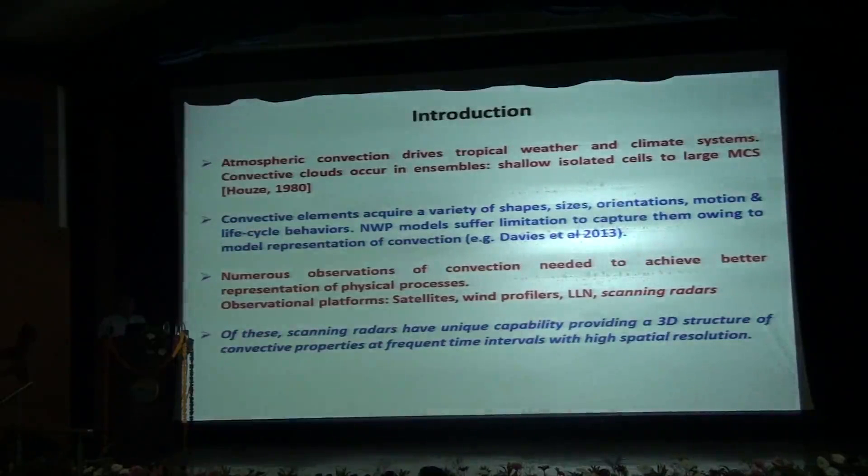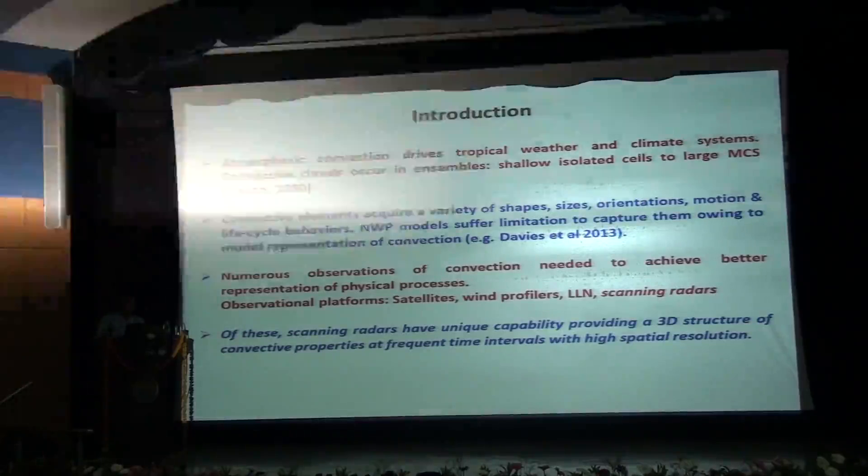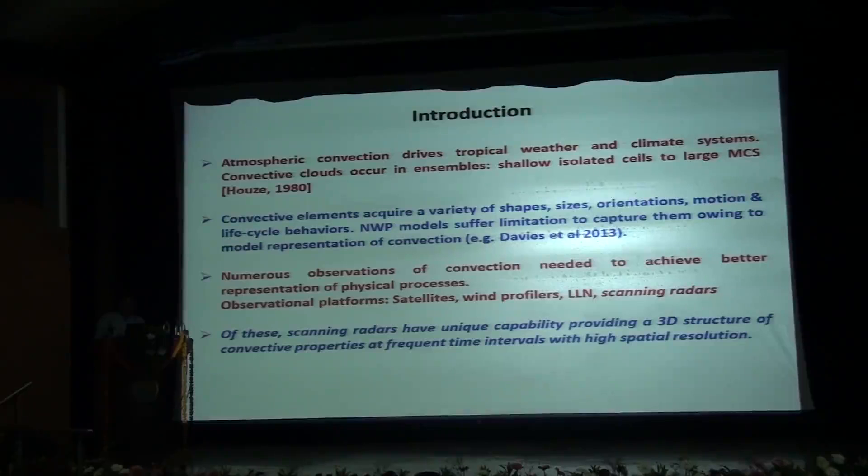I introduce by saying the importance of atmospheric convection. Atmospheric convection drives the tropical weather and climate systems. Convective clouds occur in ensembles that cover a range of phenomena from shallow isolated cells to large mesoscale systems. Convective elements acquire a variety of shape, size, orientation, motions and lifecycle behavior. Numerical weather prediction models suffer limitations to capture them owing to model representation of convection. Numerous observations of convection are needed to achieve better representation of physical processes through improved parameterizations.